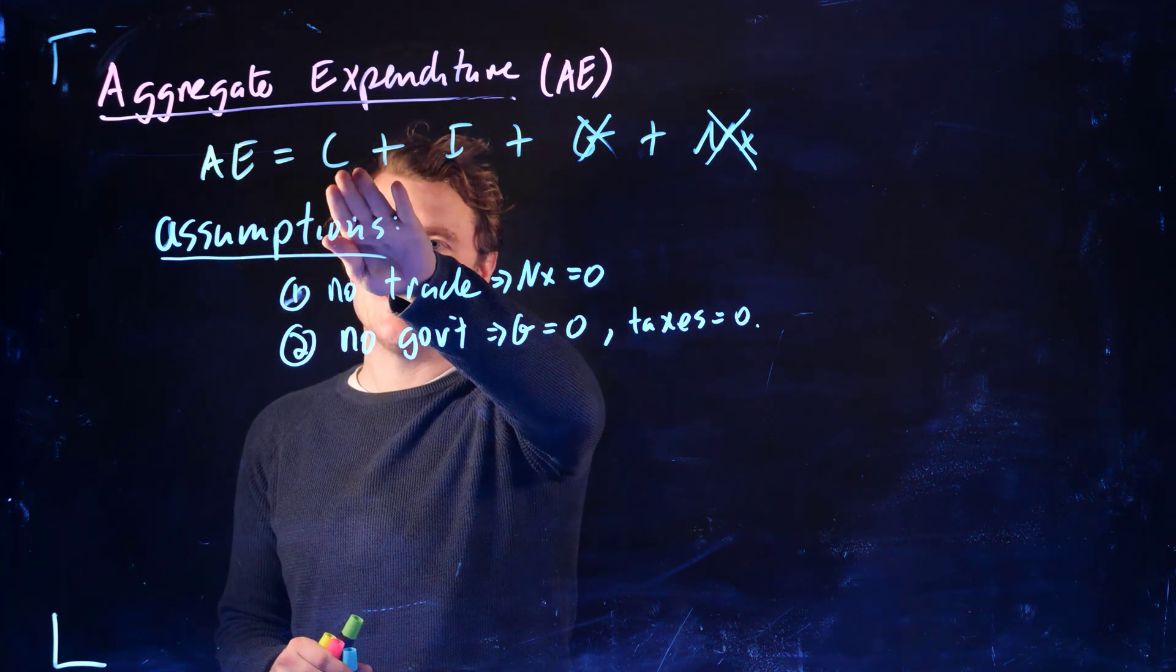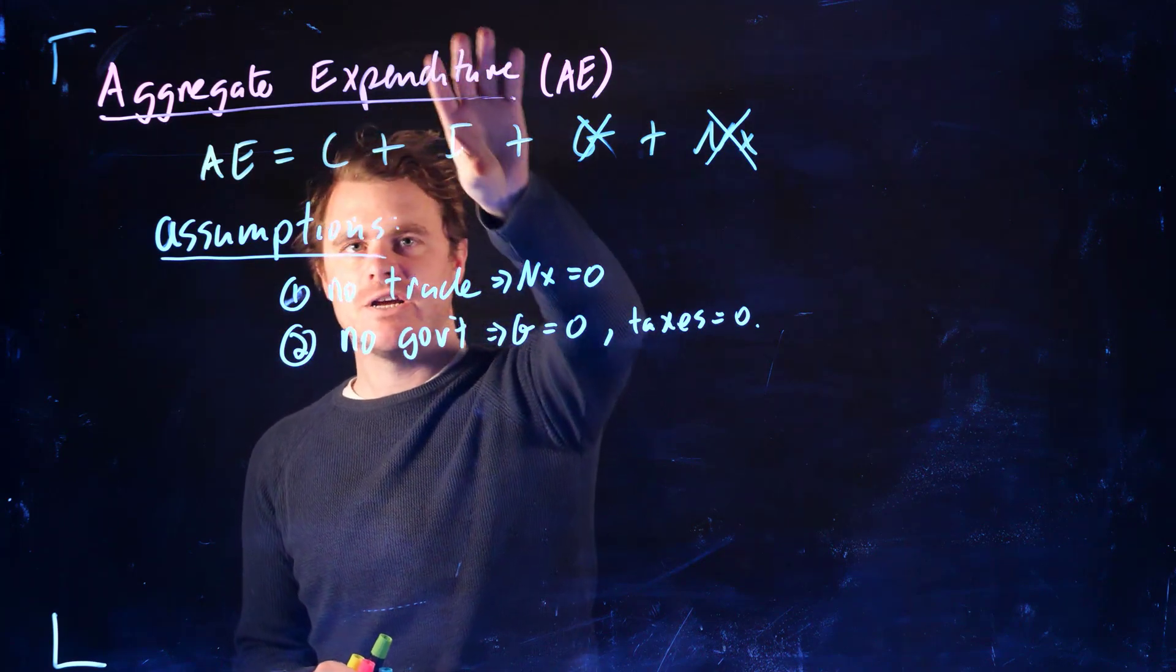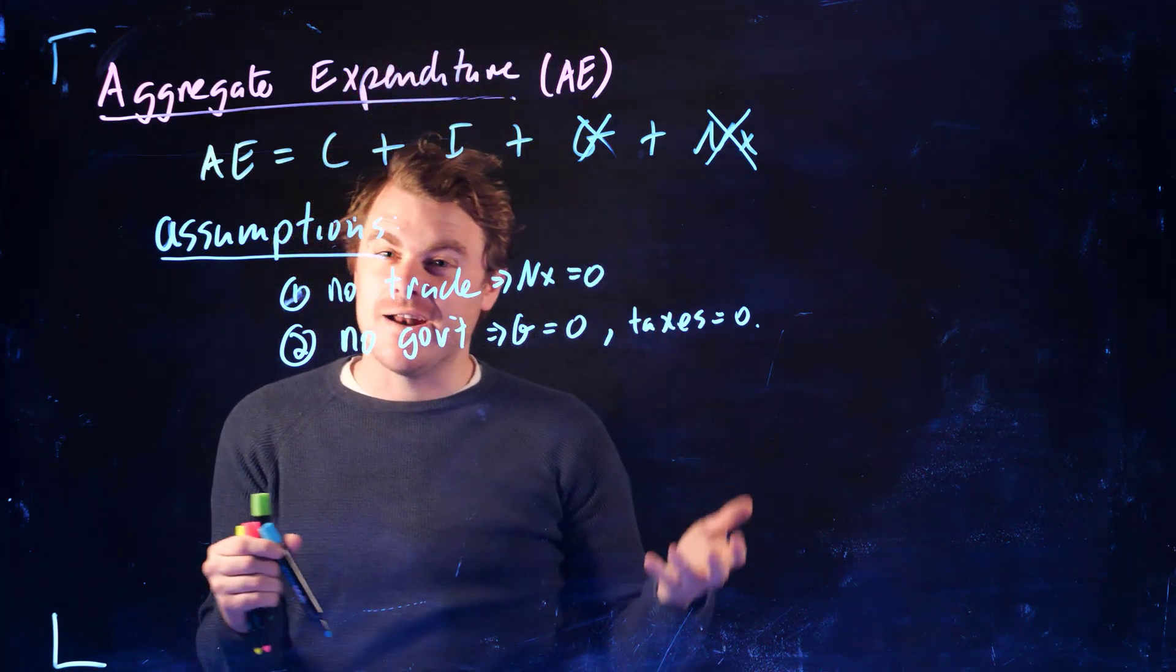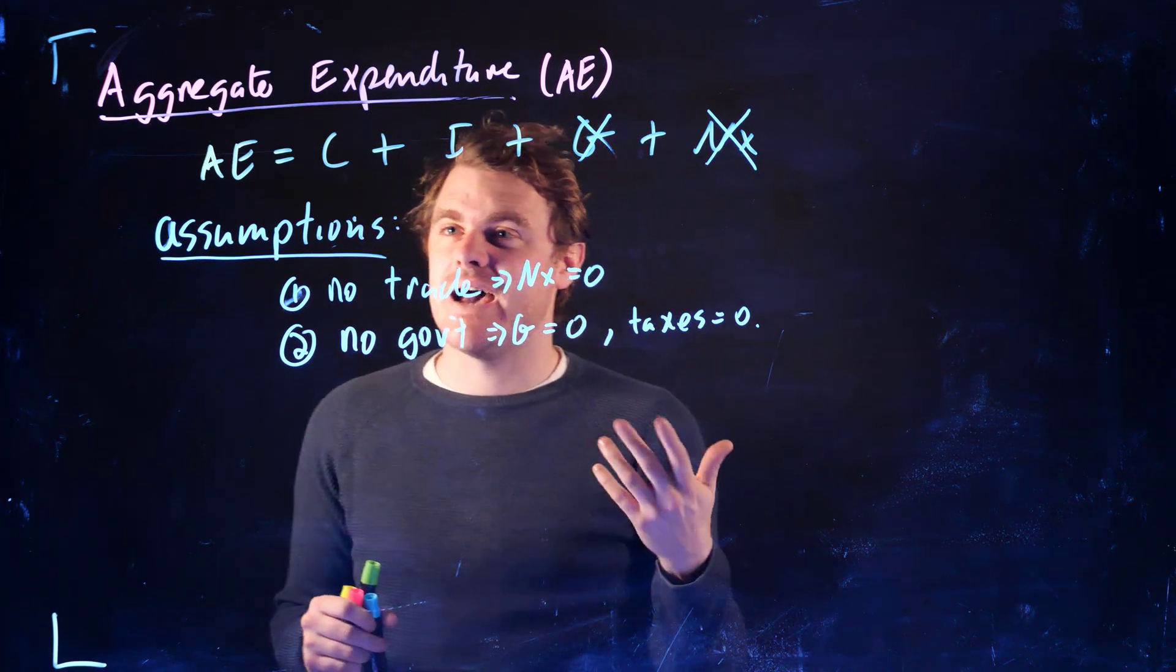And so our AE function is just C plus I. And we're really going to concentrate on these first two categories of expenditure or desired expenditure.